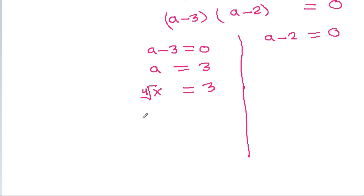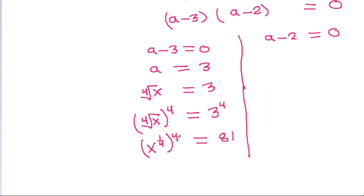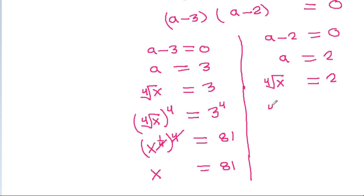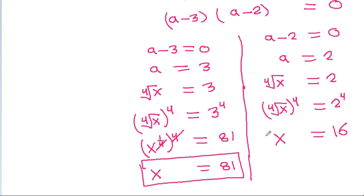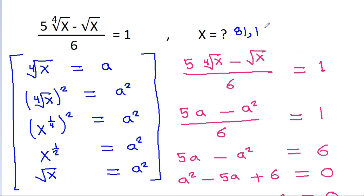Raising both sides to the power 4: the 4th root of x to the power 4 equals 3 to the power 4, so x equals 81. For a equals 2, the 4th root of x equals 2, and raising to the power 4 gives x equals 16. Therefore, x equals 81 and x equals 16.